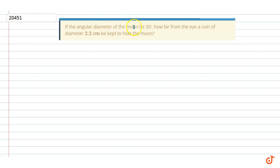In this question, if the angular diameter of the moon is 30 minutes, how far from the eye should a coin of diameter 2.2 centimeters be kept to hide the moon? This is the moon here, this is our coin here, and here is our observer. This will be this way, the angle is 30 minutes.